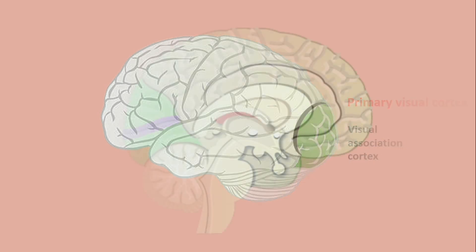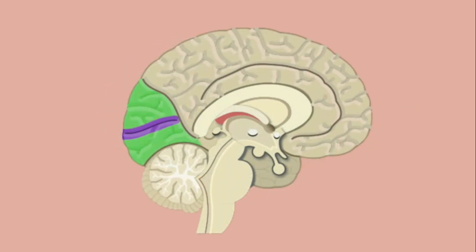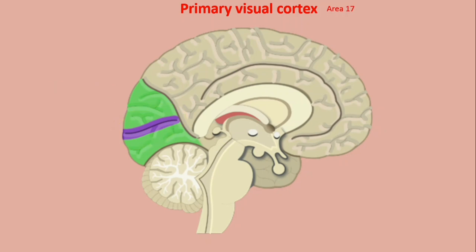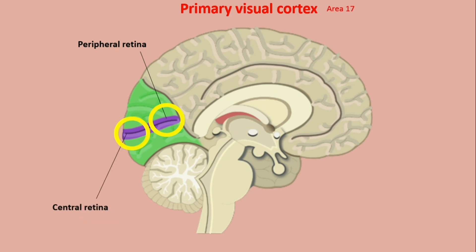The primary visual cortex, or area 17, occupies the walls of the calcarine sulcus on the medial aspect of the cerebral hemisphere. Its anterior part represents the peripheral retina, while the posterior part represents the central or macular retina.